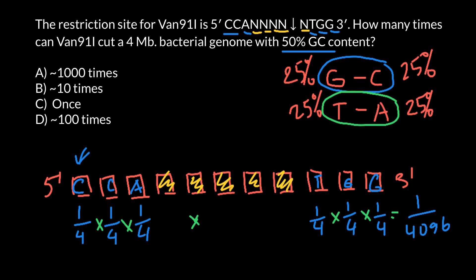So if we take any random sequence, the probability that the sequence would be as follows would be one out of 4096. Or in other words, we can say that this restriction enzyme would cut a sequence that is long enough - in our example, four million base pairs - once every 4096 base pairs.